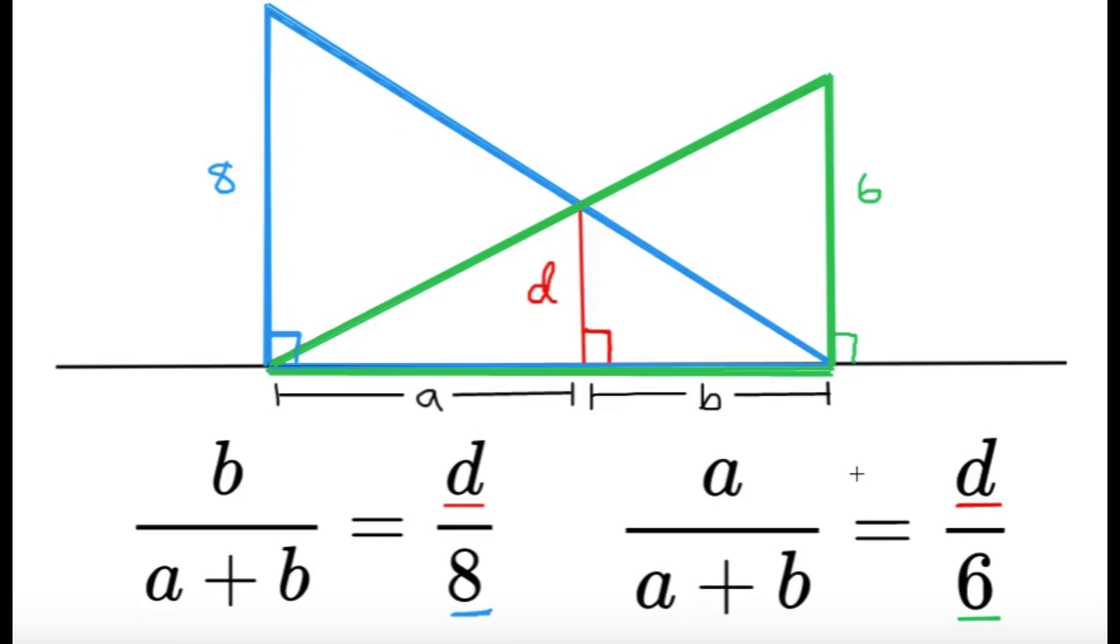Now, same logic is done to get the second equation. We focus on the green triangle. We still have this right triangle over here, as I've highlighted, and this right triangle is similar to the big green triangle. Again, I can compare the corresponding sides. I have a is to d over here, and then I have a plus b is to 6. So that's what you see here.